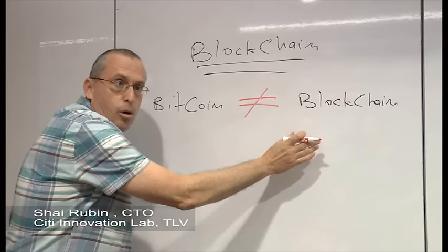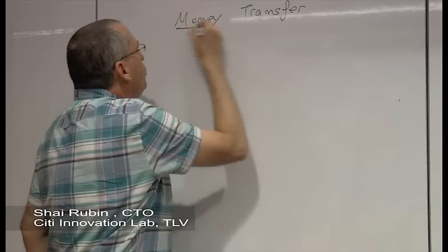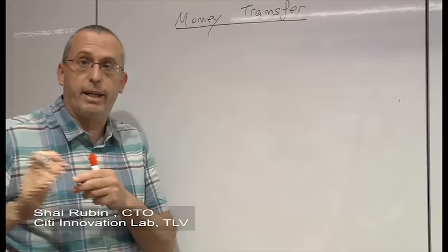Okay, so after we understood the basic terms of Bitcoin and blockchain, it's time to go into the problems that blockchain attempts to solve. And the problem is money transfer. I'm going to explain it at the conceptual level. I'm not going into the implementation details of how it is done in practice. The important thing to keep in mind is as a concept only.